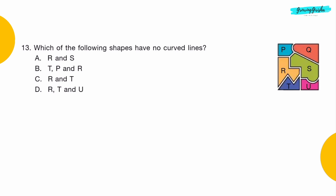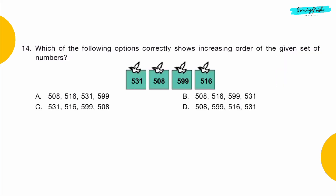Question 13: Which of the following shapes have no curved lines? Option C: R and T.